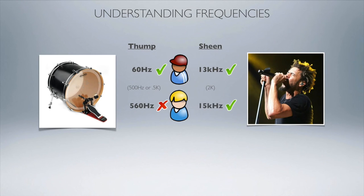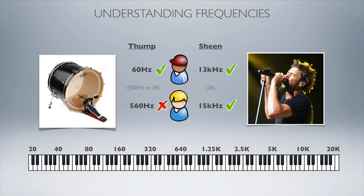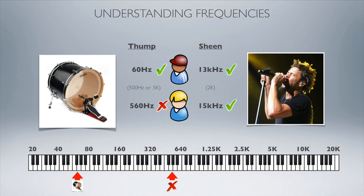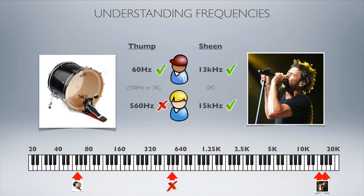Let's look at the numbers again. Engineer A put the thump of the kick drum at around 60 Hertz. Look at where 560 Hertz is — that's completely wrong. If you were trying to get more oomph at the low end of your kick drum and dialed up 560 Hertz, you'd be missing it by a football field. But on the sheen side, 13k and 15k live very close together because of the exponential nature of the Hertz scale. Even though it's a 2k difference, the span between 13k and 15k is minuscule compared to the span between 60 and 560 Hertz.